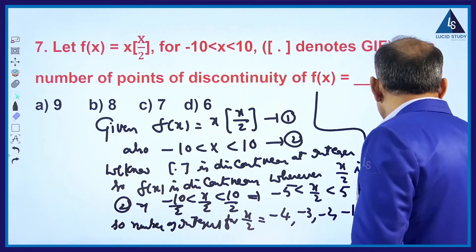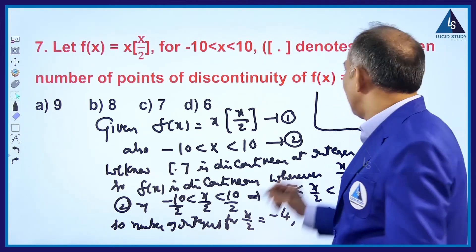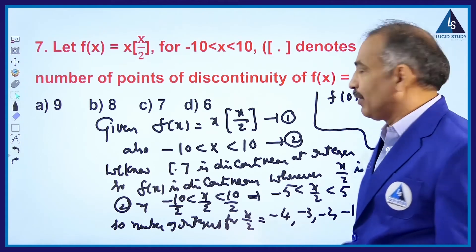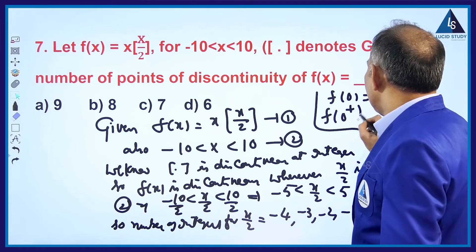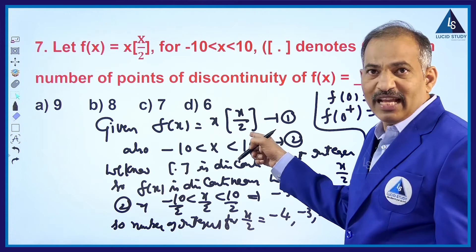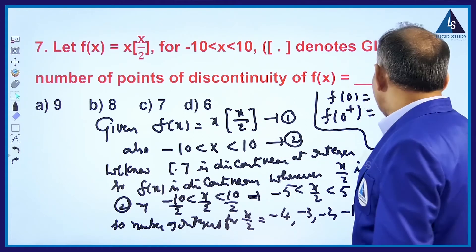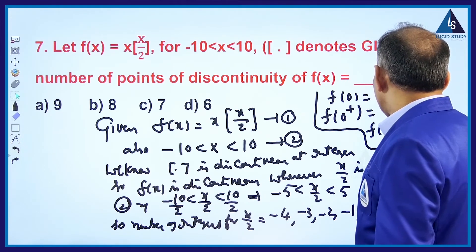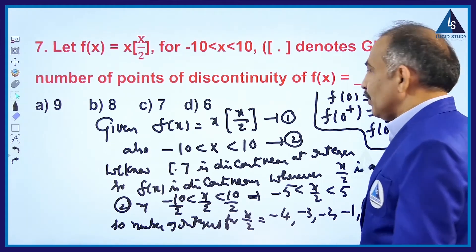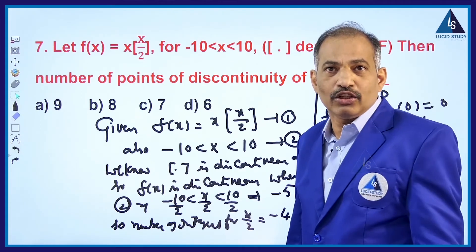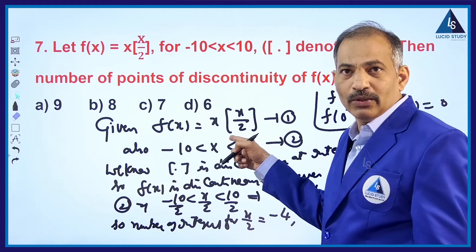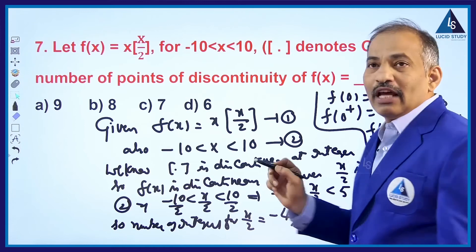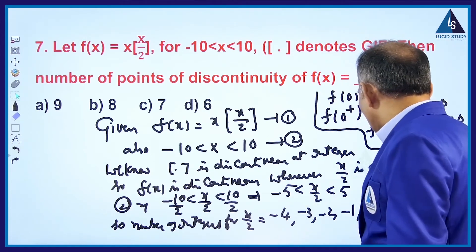Now I am going to discuss the continuity of the function at 0. f(0) = 0·[0/2] = 0, so the functional value is 0. For the right-hand limit, f(0+) = 0·[0+something)/2] = 0·0 = 0. For the left-hand limit, f(0-) = 0·[(0-slightly)/2] = 0·(-1) = 0. Therefore, f is continuous at x = 0.